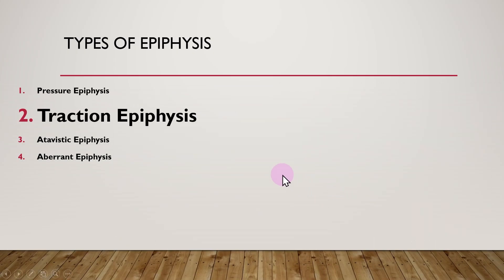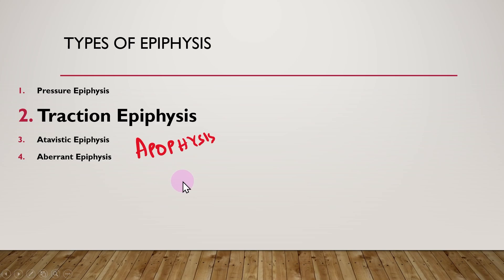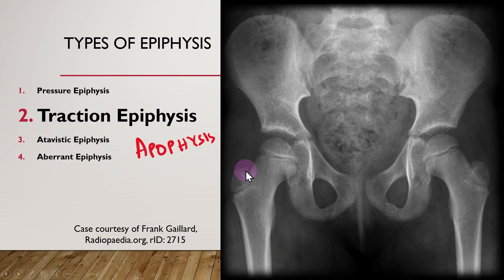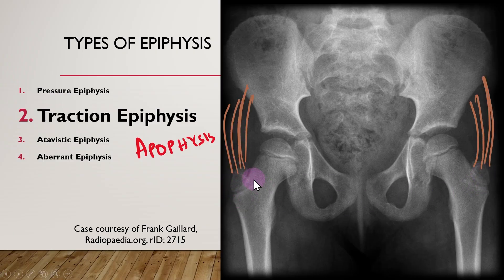Next we will see what a traction epiphyses is — also called by clinicians as traction apophysis, or simply as apophysis. These secondary ossification centers are in non-weight-bearing areas, and that's a key difference from pressure epiphyses. They are seen in locations where you have muscle pulls.